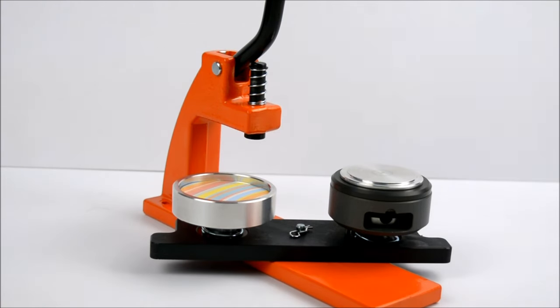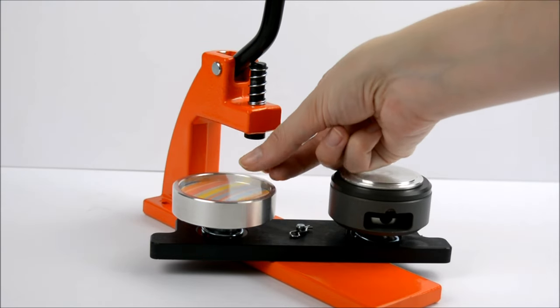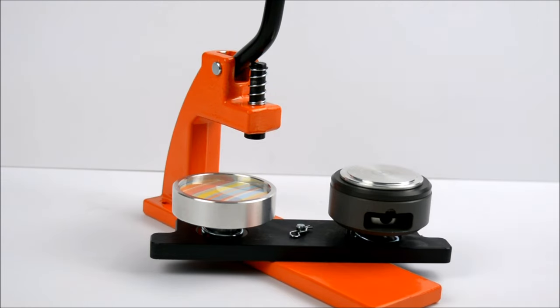Next, place your artwork on top, face up. Then place one piece of plastic film on top of your artwork. It's important to only use one piece to prevent the machine from jamming.